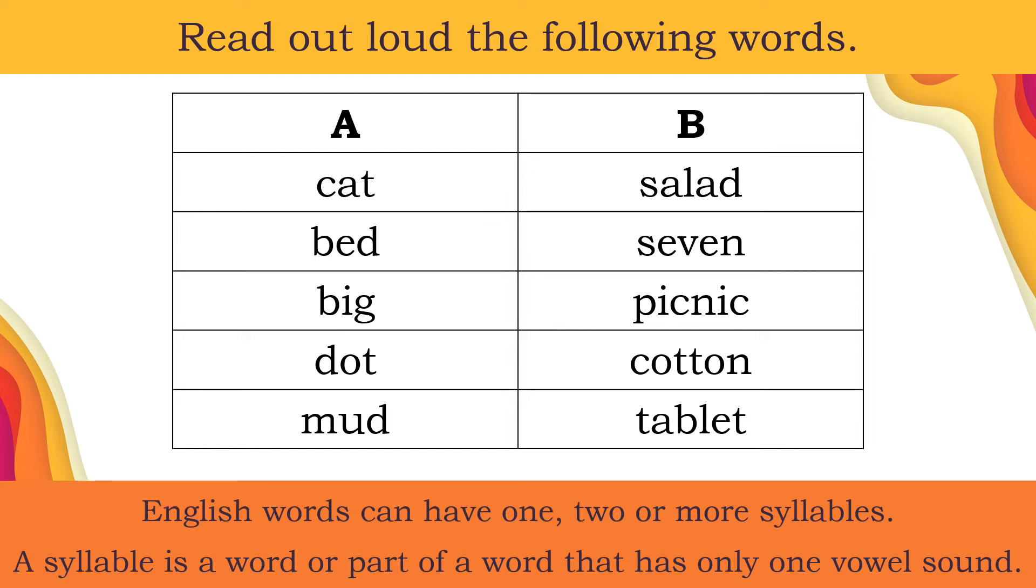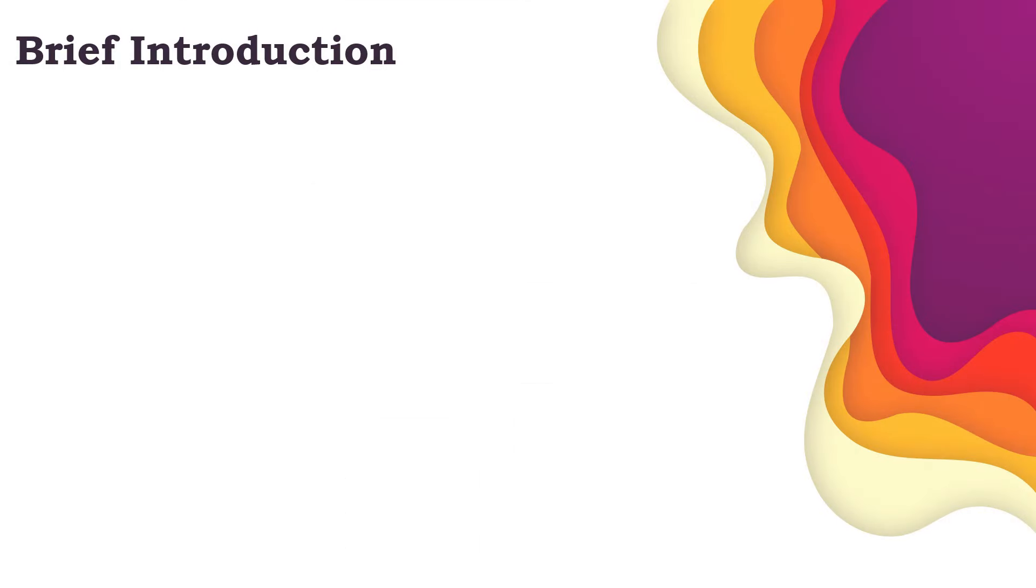English words can have one, two or more syllables. When we say syllable, it is a word or part of a word that has only one vowel sound.